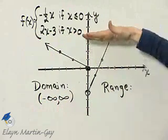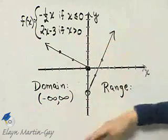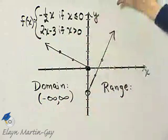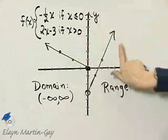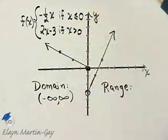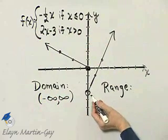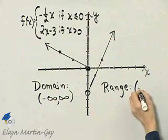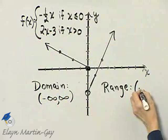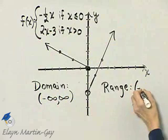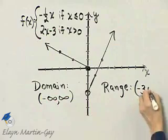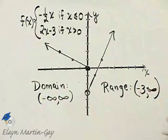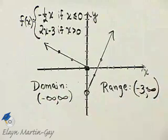What about range? That's y value, so how far down and how far up? Well, how far up, because of these arrows, it's going up to positive infinity. How far down? The lowest point, and I don't have a bracket around it. I have a parenthesis around it. That's negative three with a parenthesis to infinity. There is the range of the function.